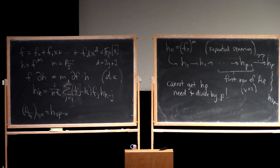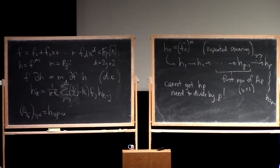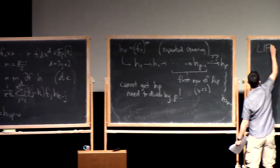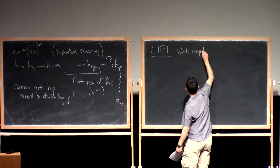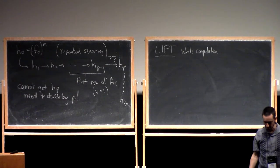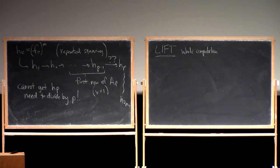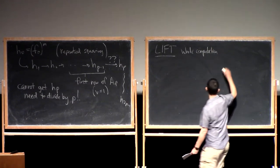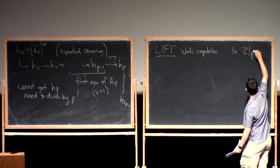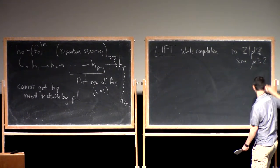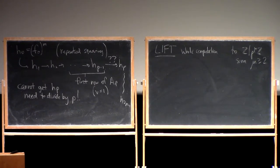So that doesn't work, and we're going to have to try something completely different: we are going to lift the whole problem to working modulo a power of p instead of modulo p. The first place I learned this idea from was a paper of Bostan, Gaudry, and Schost, which is very important in this area, though it's surely a much older idea.